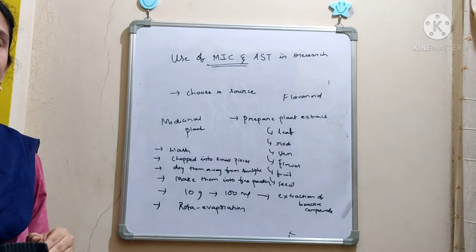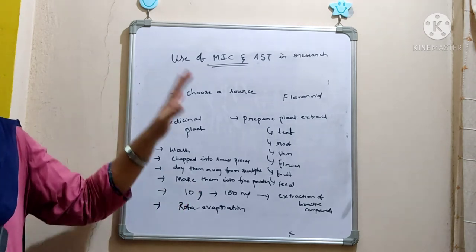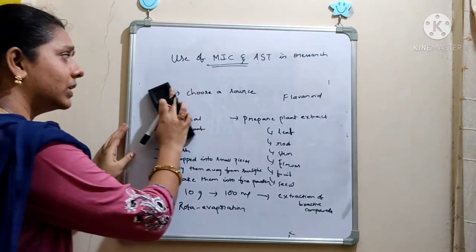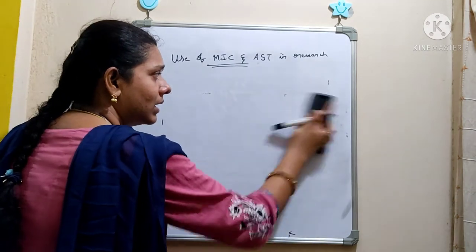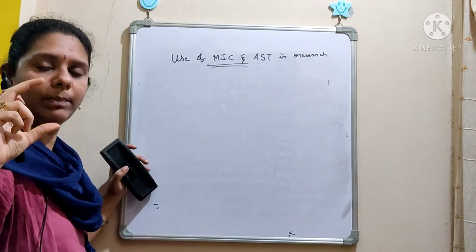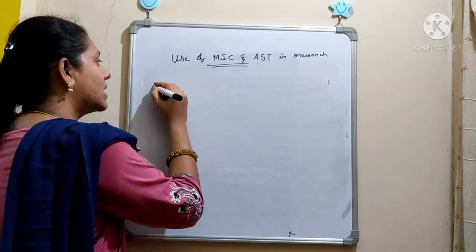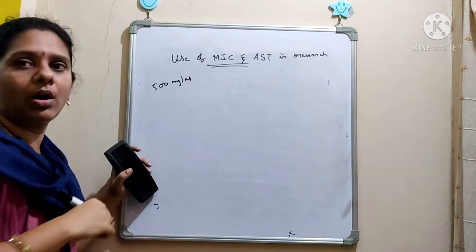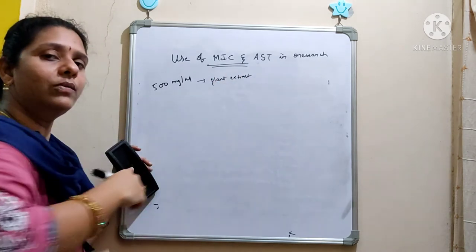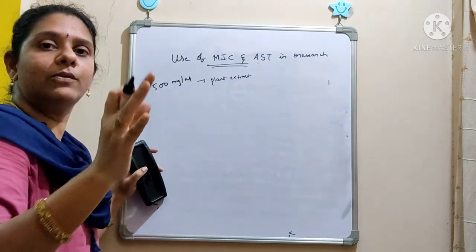Now you want to detect whether that compound has an antimicrobial property. That pure form of the compound can be used to perform the MIC. After rota evaporation, you have a plant extract that should be dissolved in DMSO to the required concentration — say 500 mg/ml as your stock. Earlier we saw serial dilution of an antibiotic; here we are going to serially dilute the plant extract. The procedure is the same — take a 96-well microtiter plate and add MH broth to all the wells.